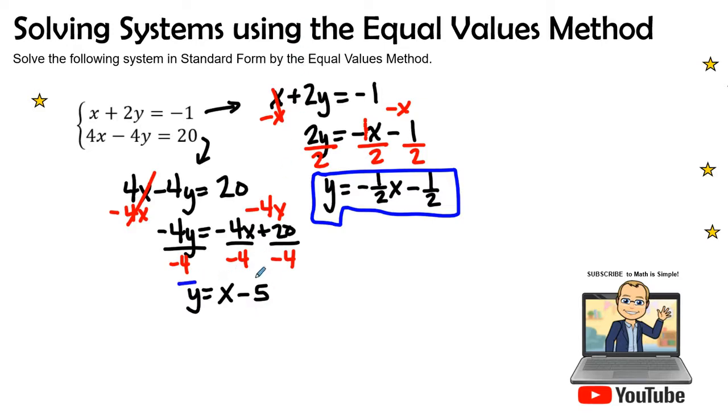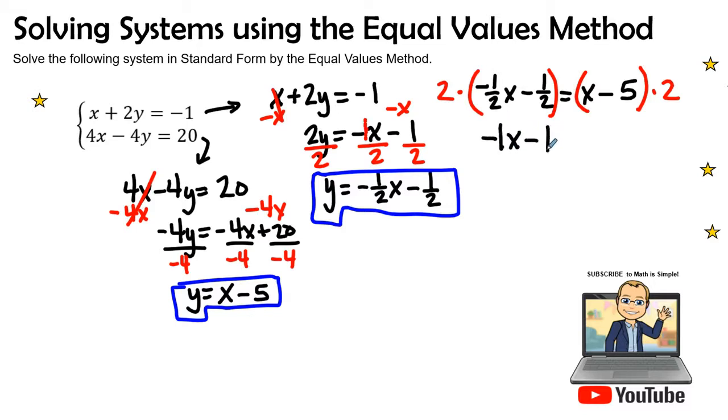So here are our two equations where we can do the equal values method. So let's plug them in. Let's put them side by side. We have negative 1 half x minus 1 half equals x minus 5. Let's go ahead and multiply both sides using our fraction buster technique. We look at our denominators. They're the same. So I'm going to multiply both sides by 2. Therefore, 2 times a negative 1. These 2's cancel out. So I will have a negative 1x minus 1. 2 times a negative half is a negative 1 equals 2 times x is 2x. 2 times a negative 5 is a negative 10.